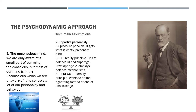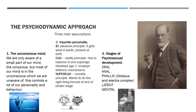The last assumption of the psychodynamic approach is the stages of psychosexual development. Freud believed every child goes through the oral, anal, phallic, latent and genital stages. The phallic stage contains the Oedipus and Electra complexes — for boys the Oedipus complex, a strong sexual desire for their mother, and for girls the Electra complex, a strong desire for their father. Freud researched this through the case study of Little Hans — communicating through letters with his father and examining his phobias and fantasies — providing evidence for psychosexual development.